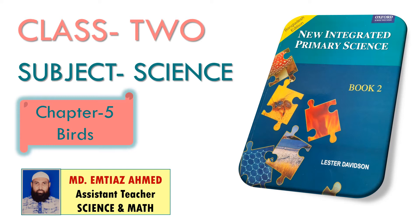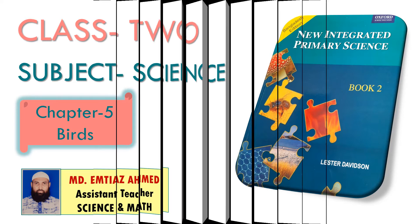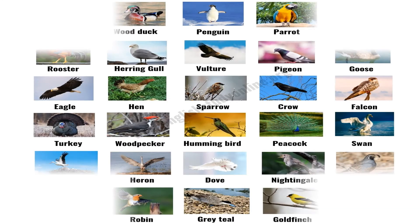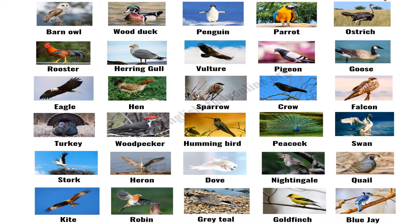Before starting this chapter I hope you all have taken your books. I would like to show you some pictures of birds. As you can see there are lots of birds in this picture and all of them are different — different in color, different in shape, different in size, and different in their activities. That's why we can say they are all birds but they are all different, and different birds have different activities and colors.